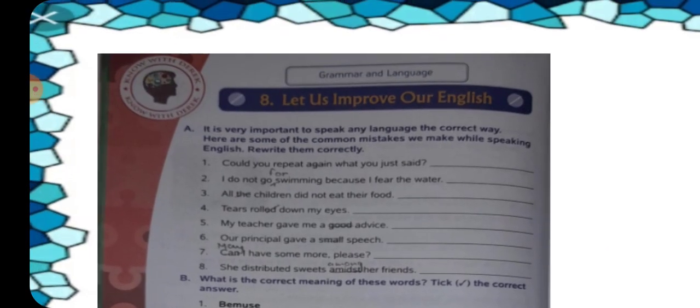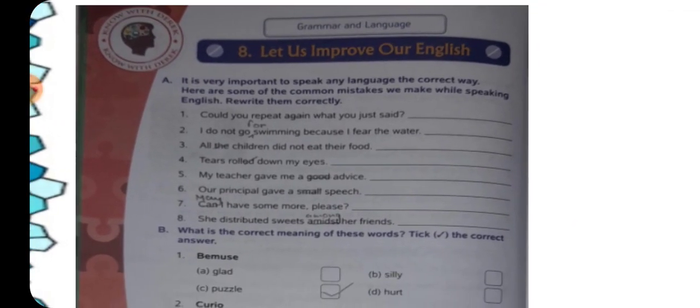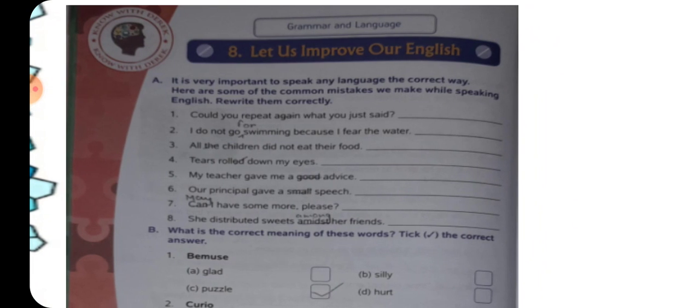Let us improve our English. What we are to do out here is we are going to rectify some mistakes which are given in the sentences. Sometimes when we are speaking English we make some common mistakes. Out here also some mistakes are there. We are going to rectify them in the sentences given. So let's start children.